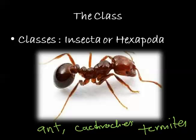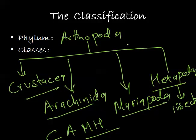To brief up: under the classification of invertebrates, we have Arthropoda, and this phylum is divided into four classes — Crustacea, Arachnida, Myriapoda, and Hexapoda (C-A-M-H). In the further session, we will deal more with the Hexapoda classification and go into the orders under the Insecta class with various examples. Thank you.